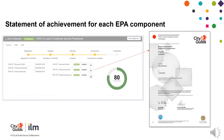Statement of Achievement for each EPA component. We will no longer send out paper Statements of Achievements as these can now be downloaded from EPA Pro. To view these, click Apprentices from the main menu on the dashboard. Search or filter for your apprentice. Click on the profile icon and next to each past component you will see a download button. Click this to view and save the Statement of Achievement.